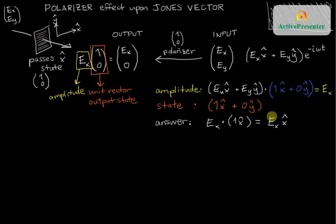That is the state that comes through the polarizer at the end of the day. This is its amplitude, and this is its polarization. That's how you do it if you're going to do it in the sort of familiar way here without Jones vectors.